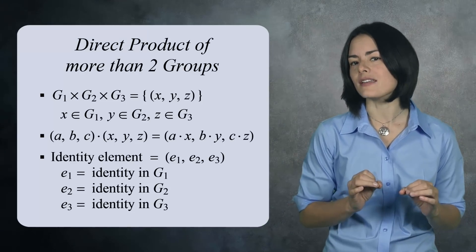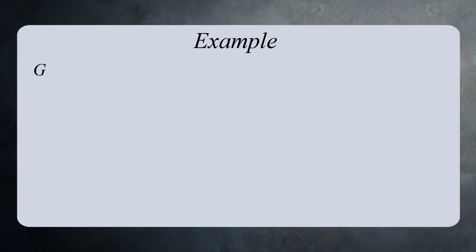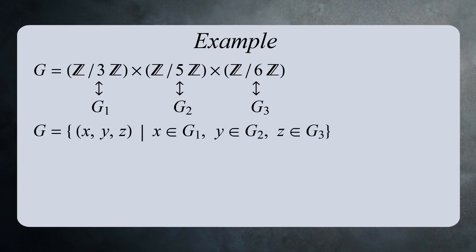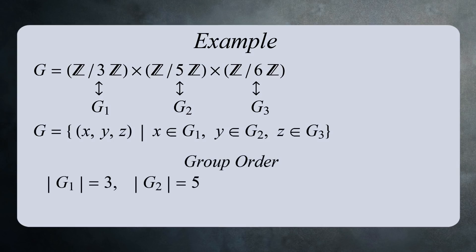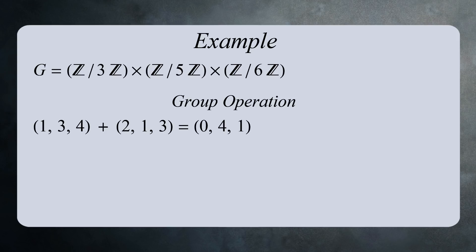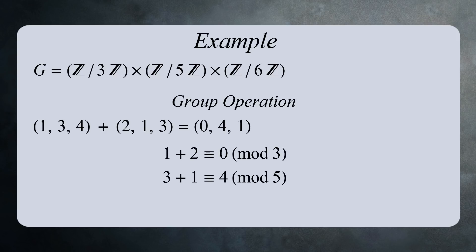As another example, let's take the direct product of the integers mod 3 under addition, the integers mod 5 under addition, and the integers mod 6 under addition. The elements in this direct product are triples, with the first component from G1, the second from G2, and the third from G3. The first group has 3 elements, the second has 5, and the third has 6, so the order of the direct product is 3 × 5 × 6 = 90. Since all three groups use additive notation, we'll use additive notation for the direct product too. The sum of (1, 3, 4) and (2, 1, 3) is (0, 4, 1), because 1+2=0 mod 3, 3+1=4 mod 5, and 4+3=1 mod 6.